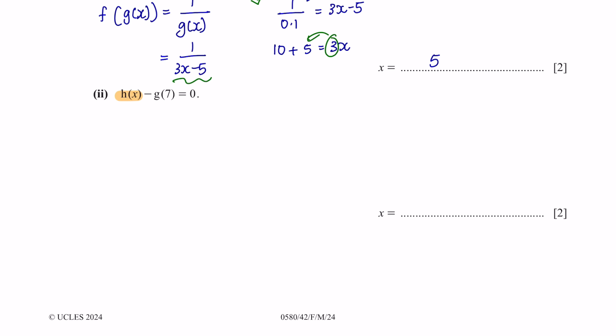Next, part 2. Function h minus function g equals 0. So function h(x) is 2 to the power of x minus function g. But instead of x, we're going to substitute 7 into it. So this will give us 16. So minus 16 equals 0. So based on the law of indices, I can make the base the same. 16 can also be written as 2 to the power of 4. Now that my bases are the same, I'm left with x equal to 4.